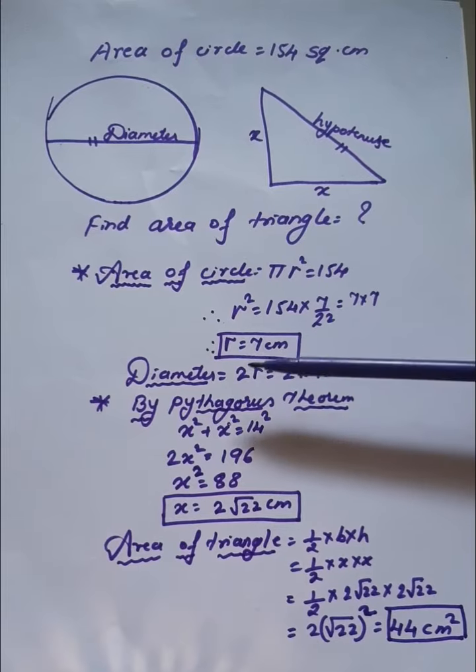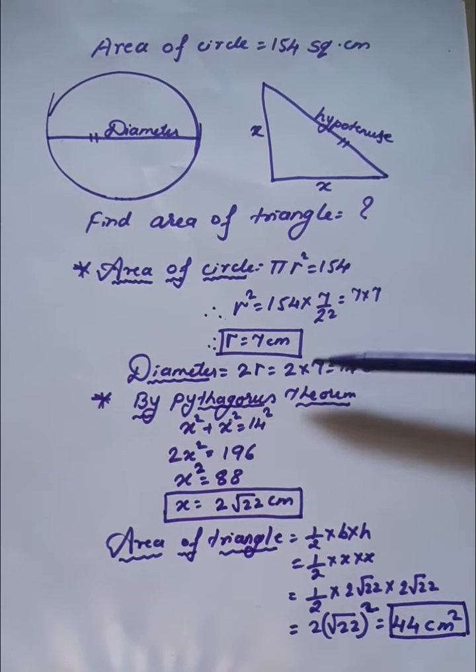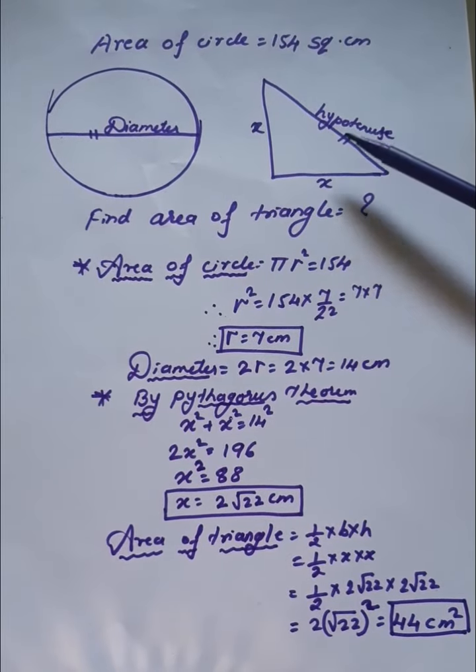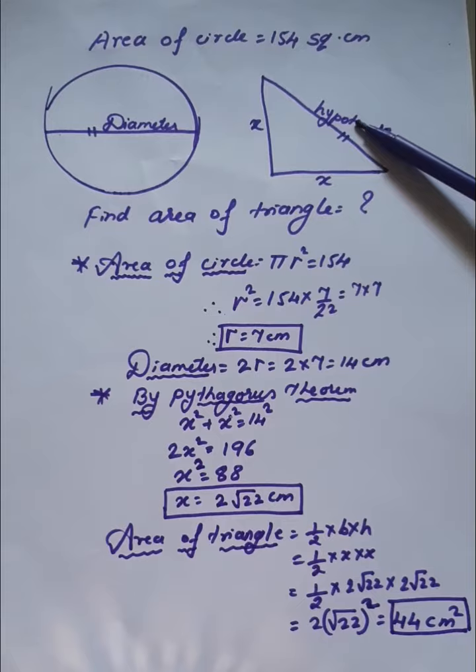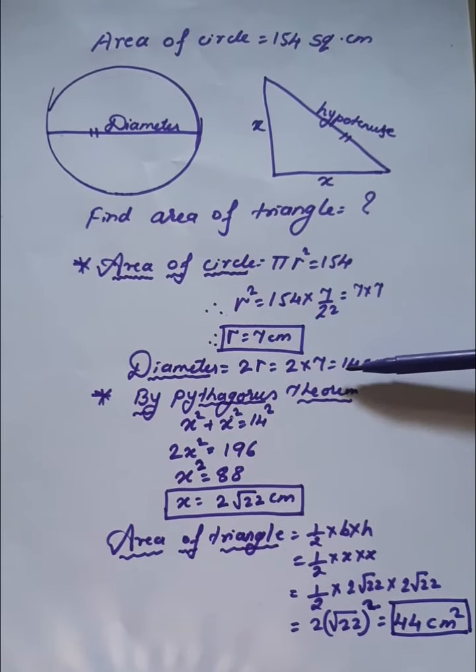Now that we know the radius is 7 cm, we can calculate the diameter using the formula 2r. That's 2 times 7, which equals 14 centimeters. Now we'll use Pythagoras theorem, since the hypotenuse and diameter are the same at 14 centimeters.